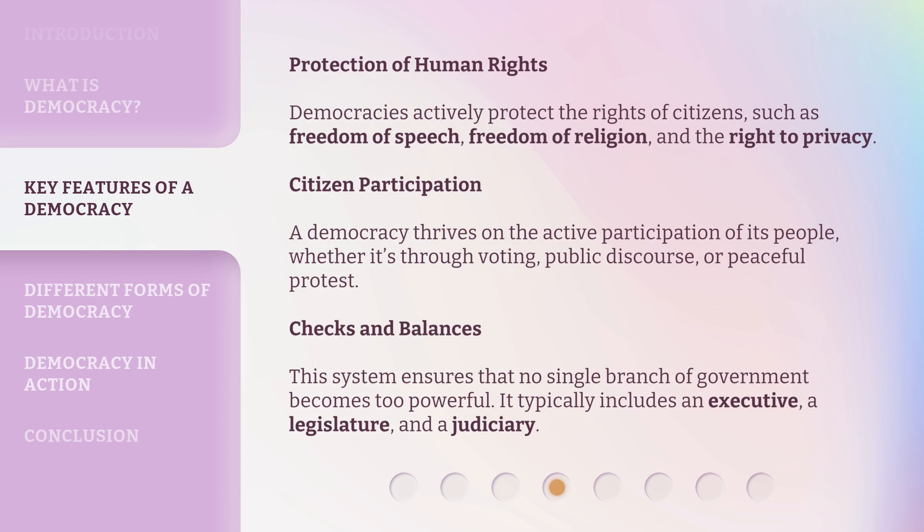Protection of Human Rights: Democracies actively protect the rights of citizens, such as freedom of speech, freedom of religion, and the right to privacy. Citizen Participation: A democracy thrives on the active participation of its people, whether it's through voting, public discourse, or peaceful protest. Checks and Balances: This system ensures that no single branch of government becomes too powerful. It typically includes an executive, a legislature, and a judiciary.